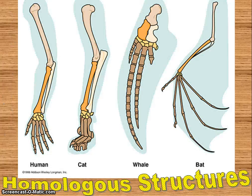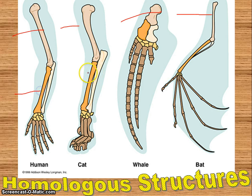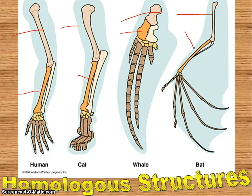Looking at the arms here, everything's been color-coded. You can see the color-coded parts are the same across the different organisms — they have the same basic parts. The greater the number of homologous structures that different organisms share, the closer the relationship among them. So they're more closely related if they have a lot of homologous structures.